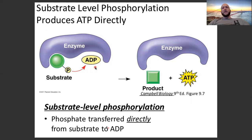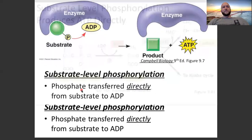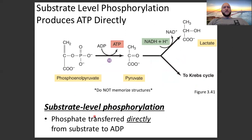Substrate-level phosphorylation also occurs in the citric acid cycle — same situation. An enzyme facilitates a reaction that transfers a phosphate group onto ADP to turn it into ATP. There's only one place where we see something other than substrate-level phosphorylation, and that's the electron transport chain. So remember: electron transport chain is different; everything else is substrate-level phosphorylation. Phosphate is transferred directly from substrate to ADP.